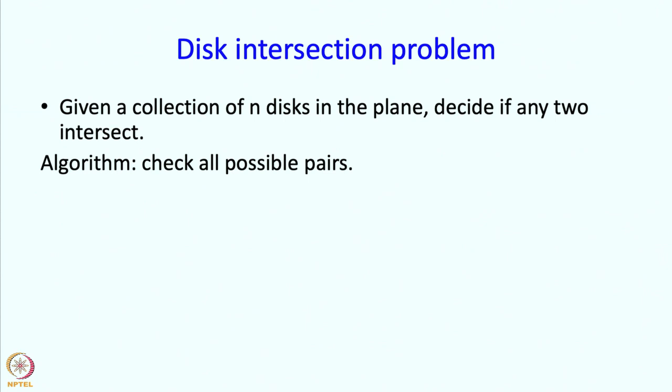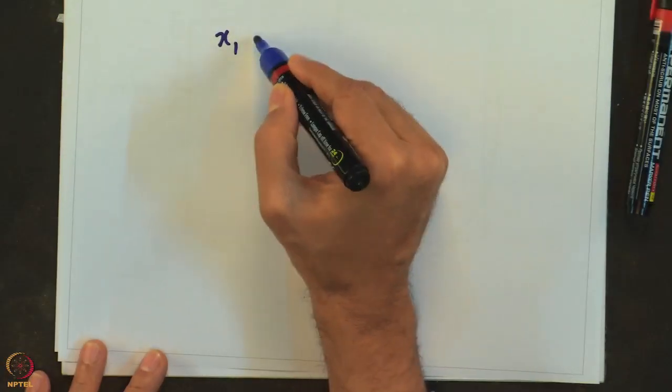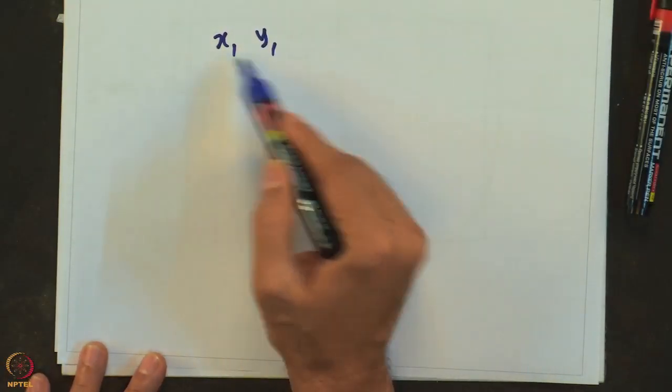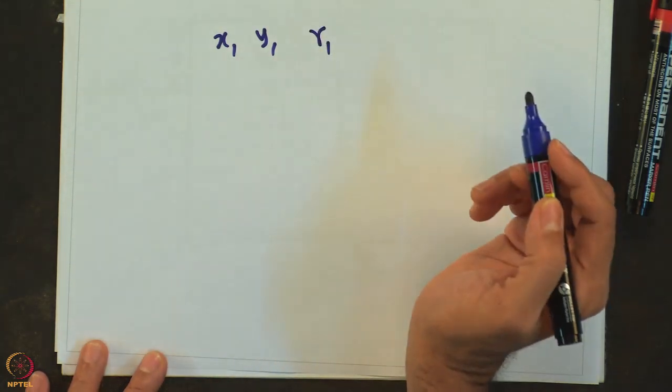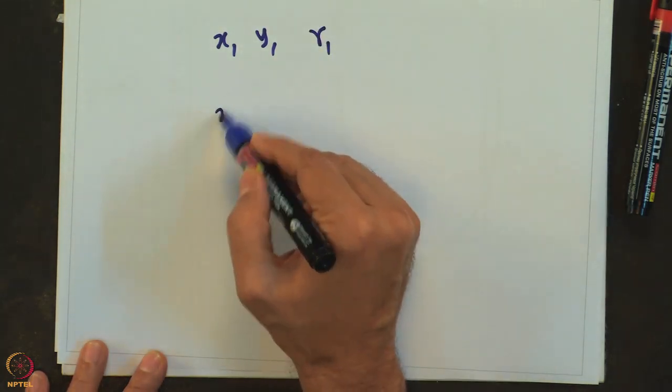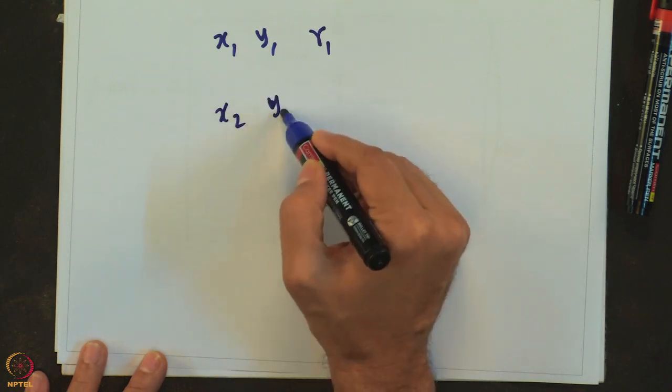Before I get into the algorithm, I should explain what exactly is given as input. What is given as input are x1, y1 which are the centers of the first disk and r1 which is the radius of the first disk, x2, r2, x2, y2 are the centers.